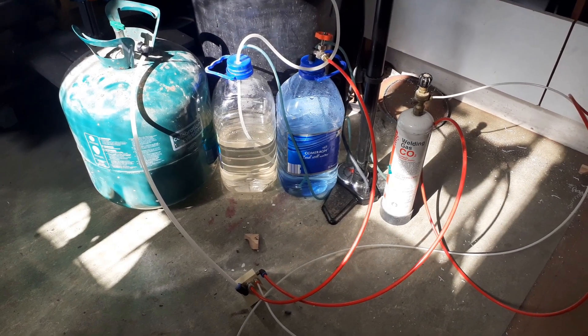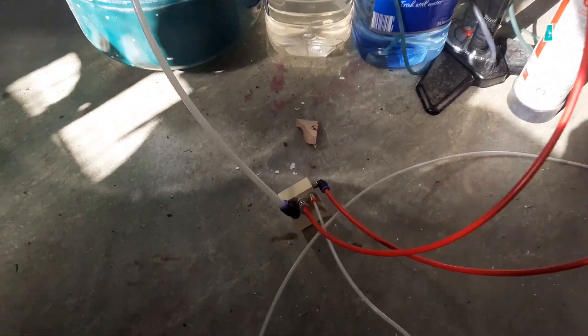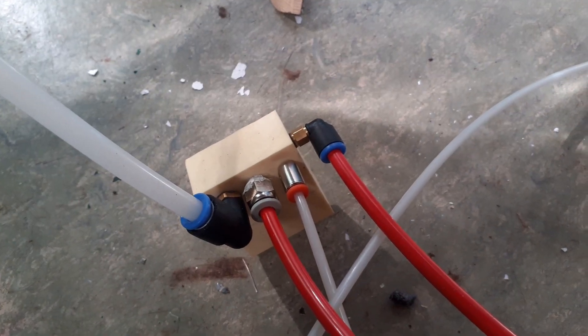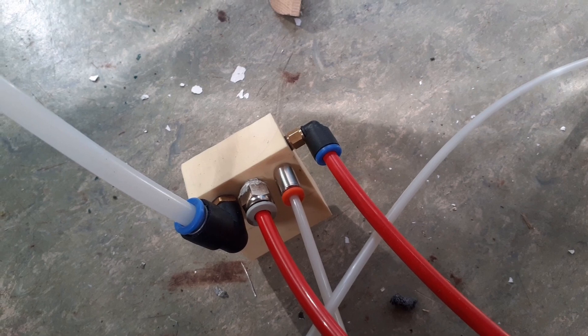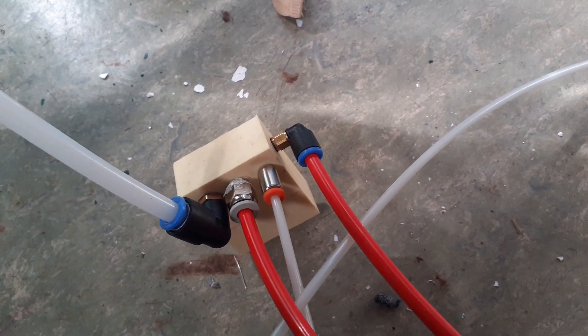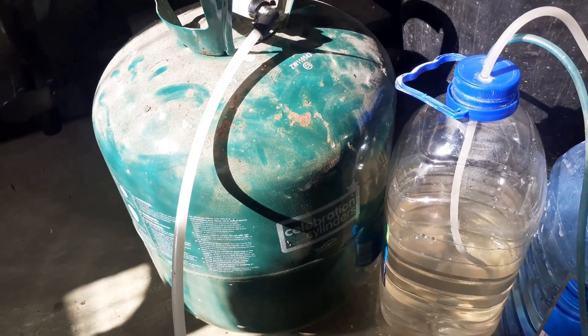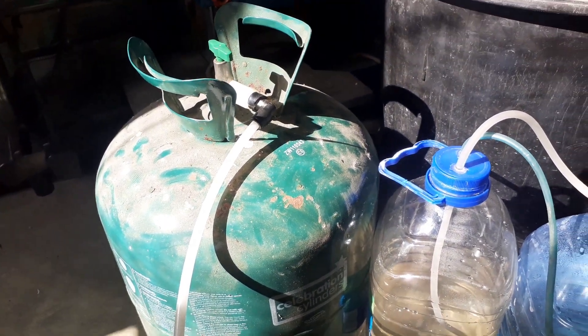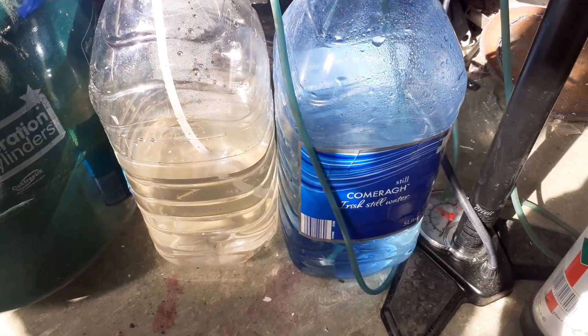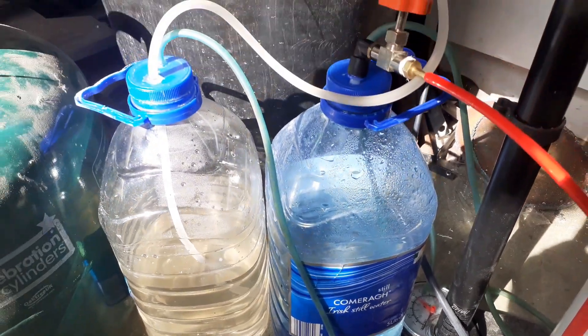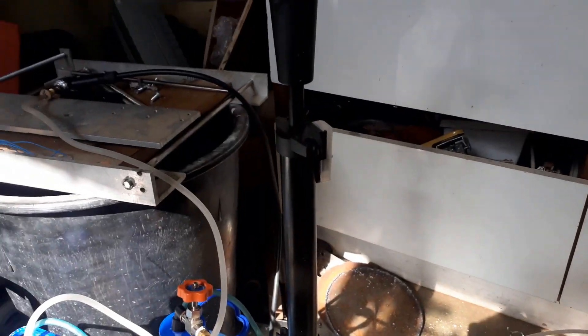So this is the gas mixing setup for the laser and it all goes through this little manifold here which is just made of polyurethane block. It's all fairly low pressure so it should be fine. Helium from one rusty helium tank and nitrogen from scrubbed air pumped in from the bicycle pump.